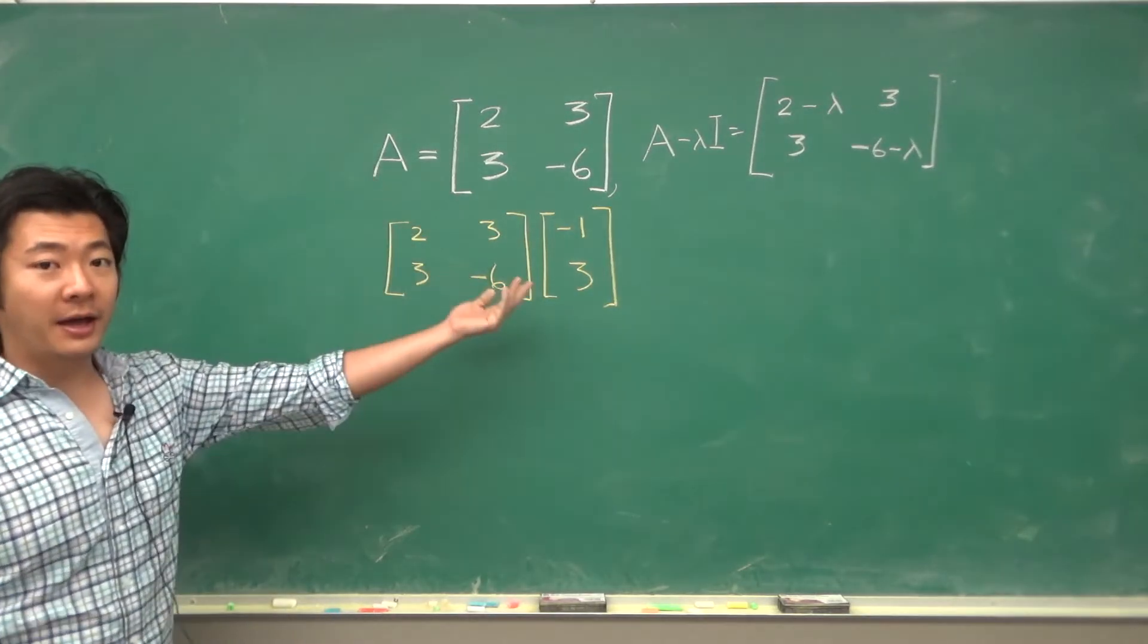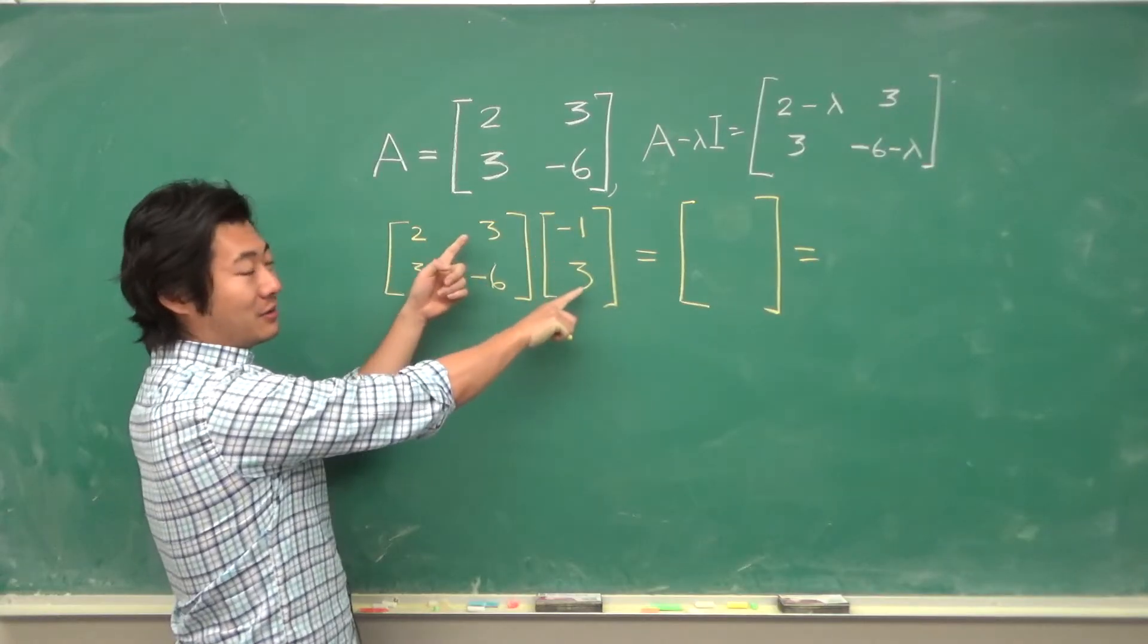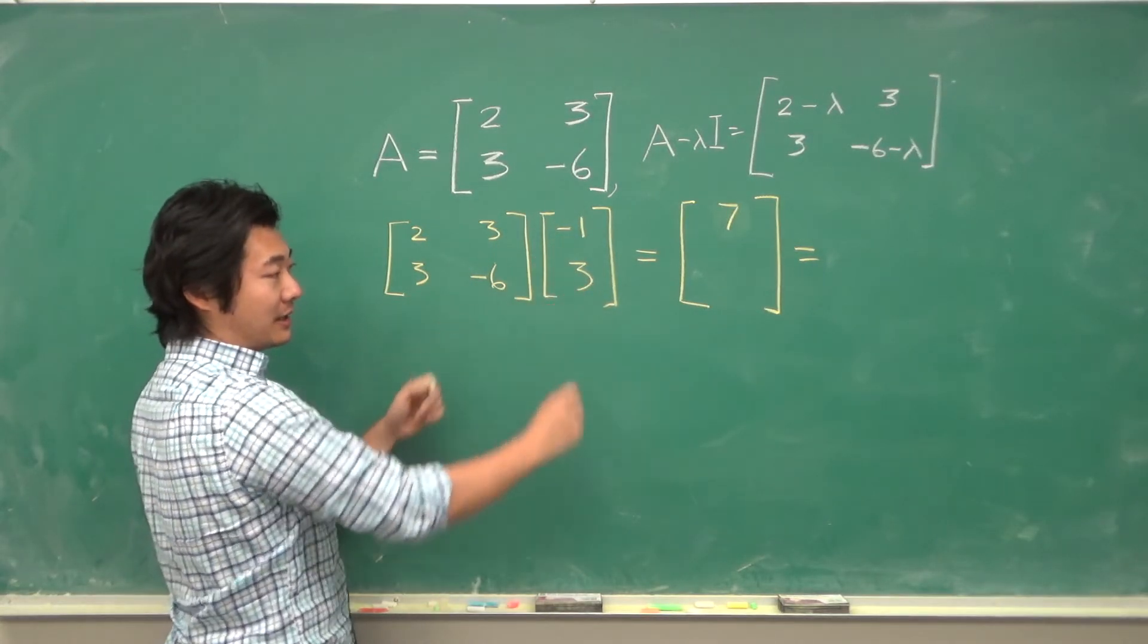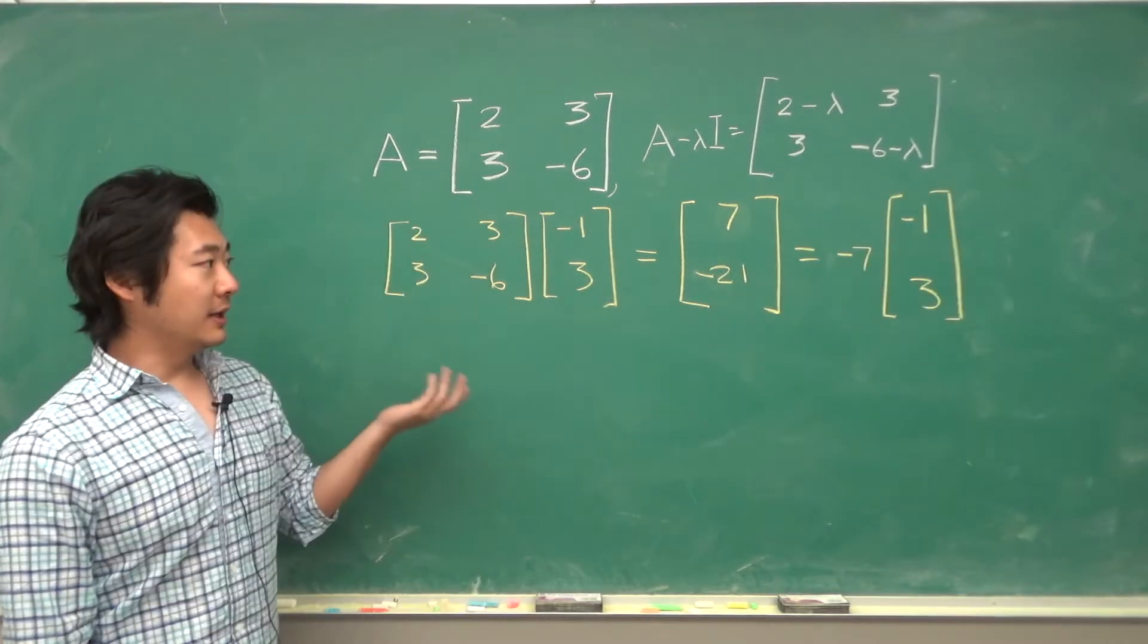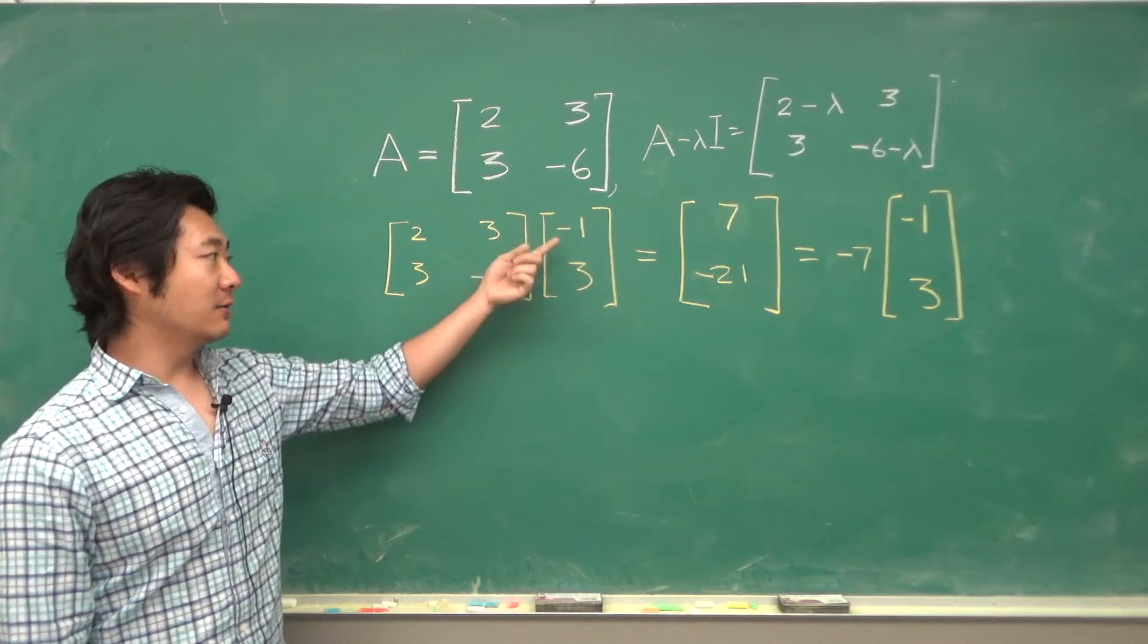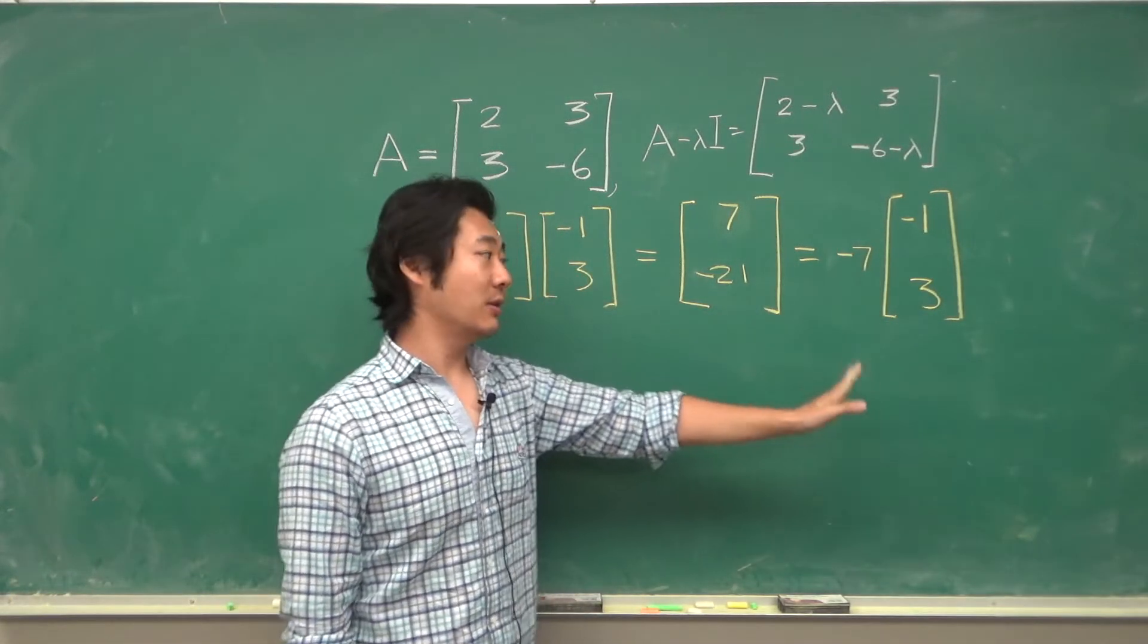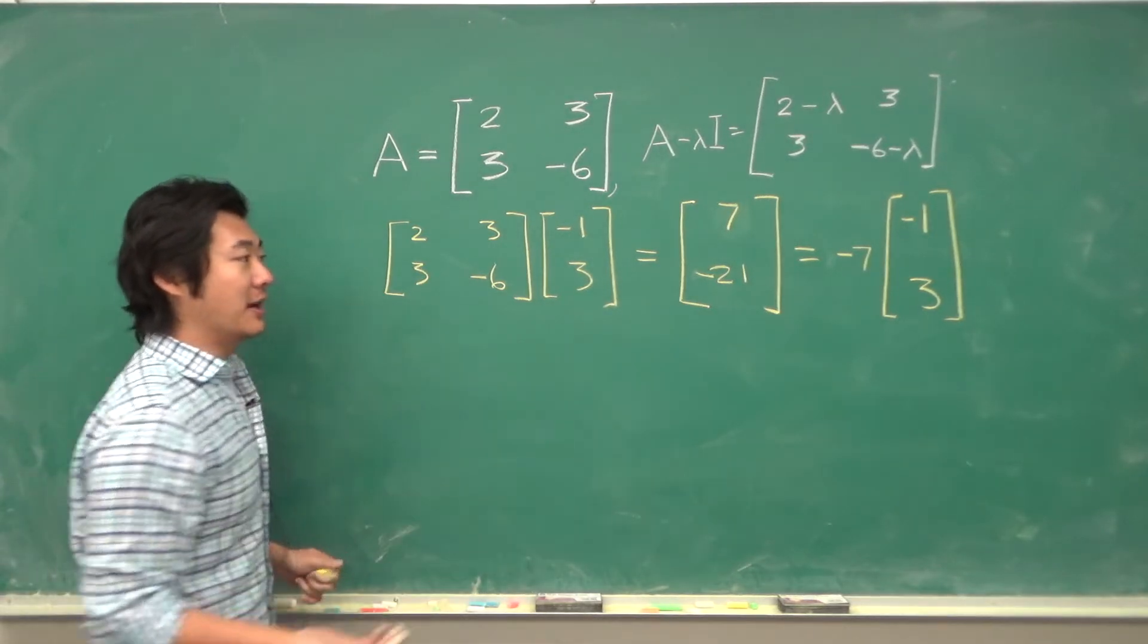So if we multiply A by our eigenvector negative 1, 3 we will get negative 2 plus 9 is 7 and negative 3 minus 18 is negative 21. If you factor out negative 7 we get that A times negative 1, 3 is equal to just negative 7 times negative 1, 3. So we did our calculation correctly. And indeed this is an eigenvector.